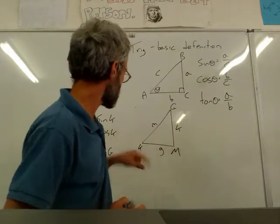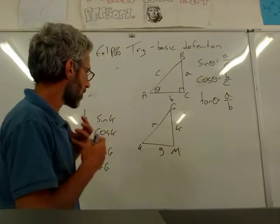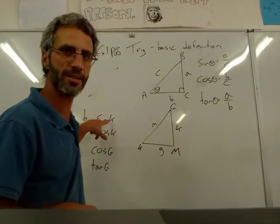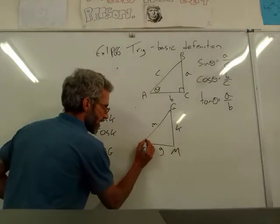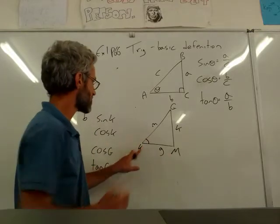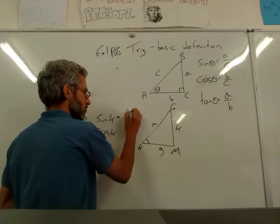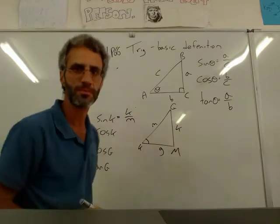So G, G, M, M, K, K. Now I'm asked to write in terms of these letters, G, K, and M. What is sine K? So this is my angle K. And what is sine K? Well, it's going to be the opposite side divided by hypotenuse. So it's going to be K over M.